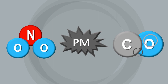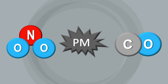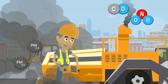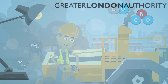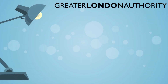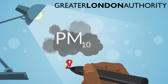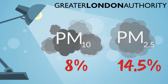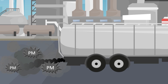One of the biggest culprits of poor air quality is plant and machines running on diesel fuel, and construction is a significant source of some major air pollutants. The Greater London Authority has calculated that construction sites are responsible for 8% of PM10 and 14.5% of PM2.5 directly emitted into the air in London. Particulate matter includes tiny particles of soot from diesel engines, which have been linked with cancer and heart attacks.